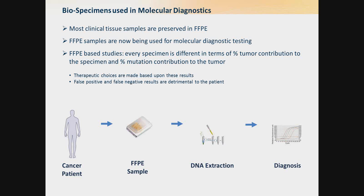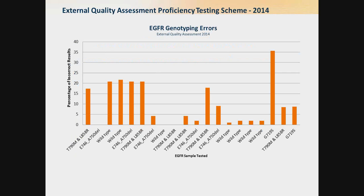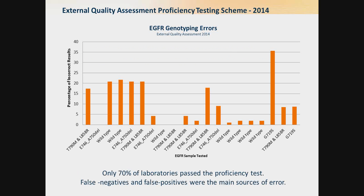Assay failures happen a lot more often than we should be comfortable with. A recent proficiency test by the EMQN looking at EGFR genotyping errors found that only 70% of the laboratories passed the proficiency test.